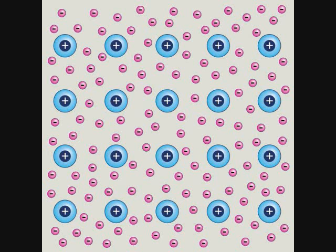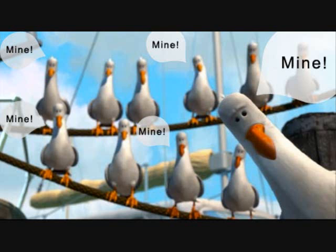Normally, metals are connected by metallic bonds, which form a sea of electrons, allowing electron exchange, which keeps the metal together. Mercury, however, does not like to share its electrons even with itself. This is also why it is a poor conductor.